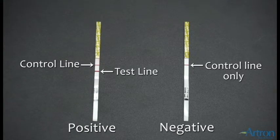The test strip on the left displays a positive result with the presence of a control line and a test line.